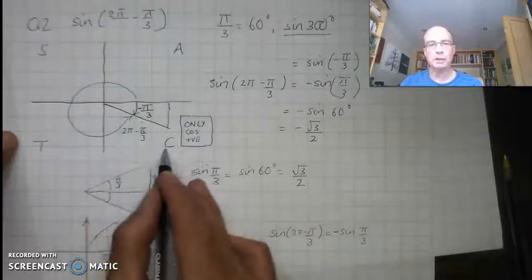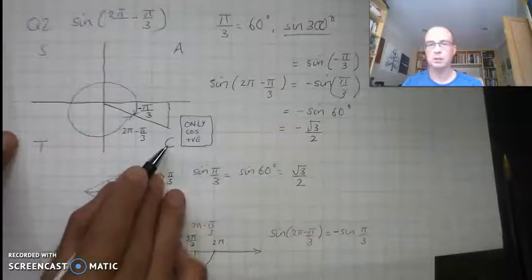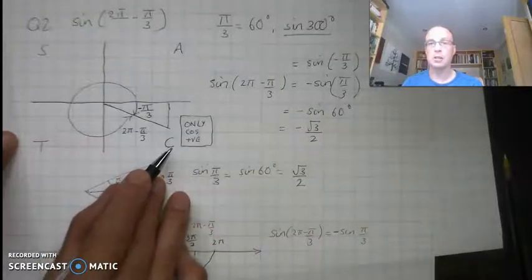Well, I know from my CAST diagram, the only one of my functions that's positive in that quadrant is cosine. So the tan and the sine are going to be negative.